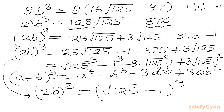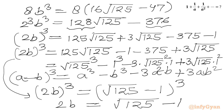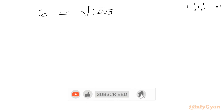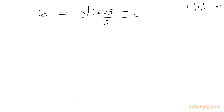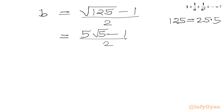So we have (2b) cubed equals (√125 minus 1) cubed. Taking the cube root of both sides gives 2b equals √125 minus 1. Dividing both sides by 2: b equals (√125 minus 1) over 2. Since 125 equals 25 times 5, √125 equals 5√5, so b equals (5√5 minus 1) over 2.